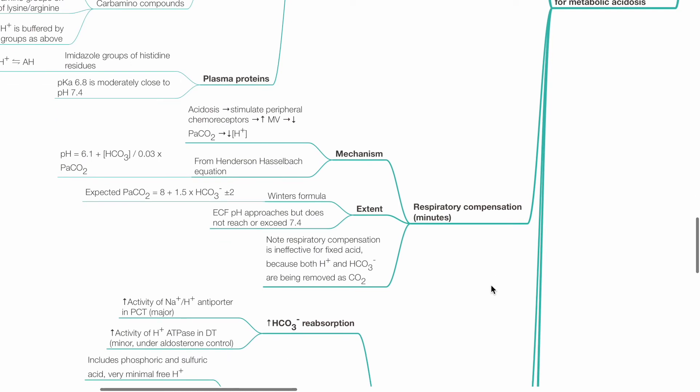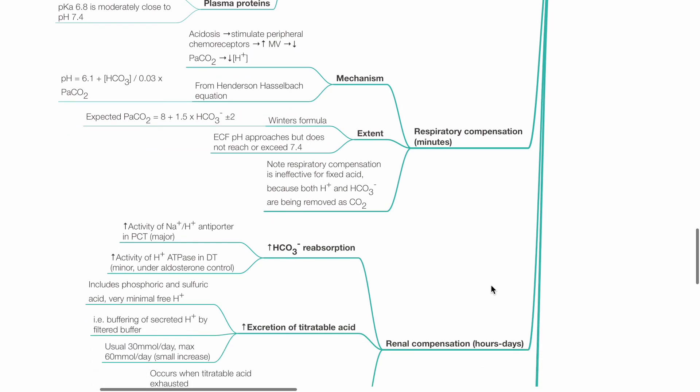Respiratory compensation occurs within minutes. Mechanism is via stimulation of peripheral chemoreceptors by hydrogen ions. This results in increased minute ventilation and increased CO2 exhalation, which results in reduced hydrogen ions. Expected PaCO2 can be estimated by Winter's formula, which equals 1.5 times bicarbonate ion plus 8 plus or minus 2. ECF pH approaches but does not reach or exceed 7.4. Respiratory compensation is ineffective for fixed acid because both hydrogen ion and bicarbonate ions are being removed as CO2, which is a volatile acid.